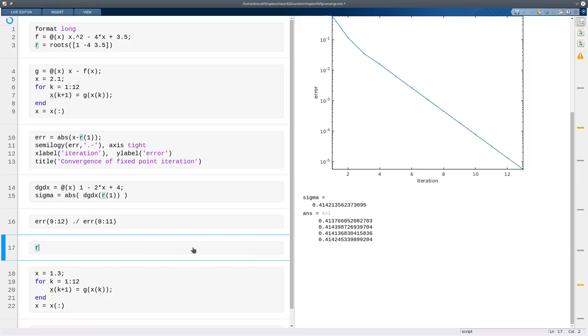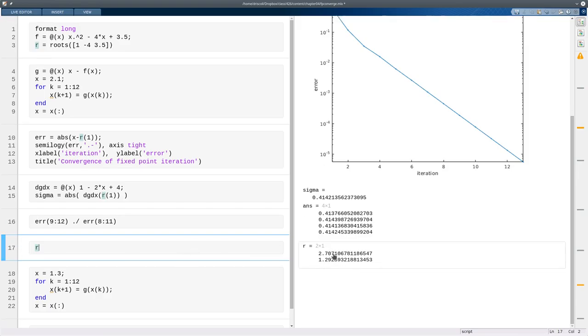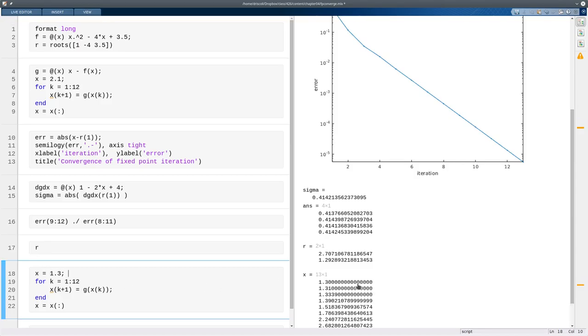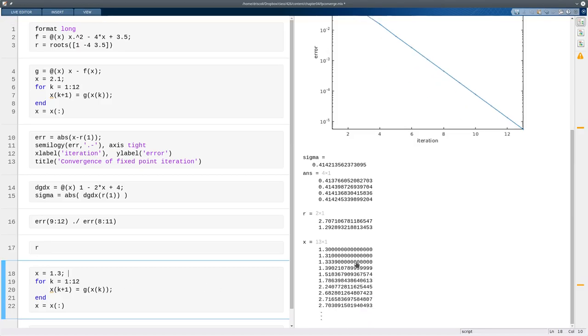But there's another root. So we found the first one. What about the second one? Well, this time I'm going to start at 1.3, which is very close. And when I do the iterations, you see that it does not converge to that point. In fact, it looks like it might be converging to the other one.